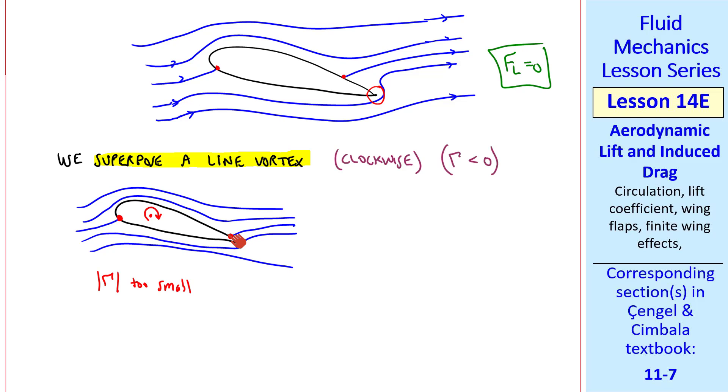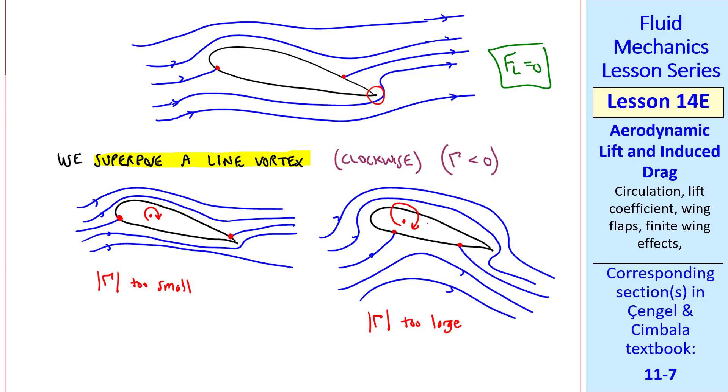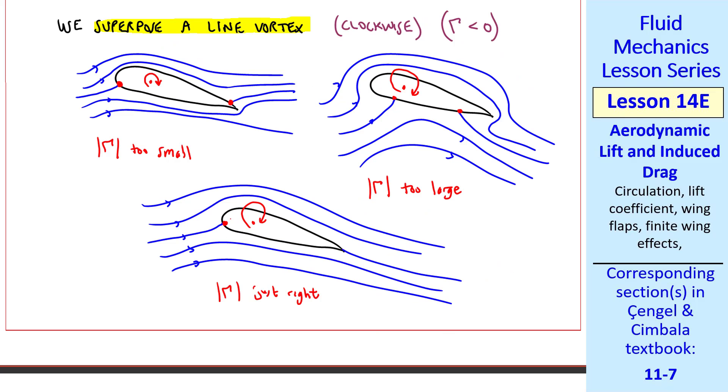If the magnitude of gamma is too large, both stagnation points end up on the bottom surface. We get lots of lift, but again, this flow is not physical around this sharp trailing edge. But if gamma is just right, the streamlines flow nice and straight off the trailing edge. It's kind of like Goldilocks and the Three Bears. Too small, too large, and just right.